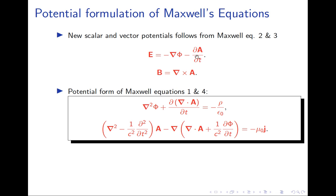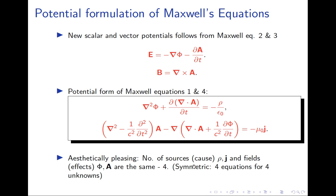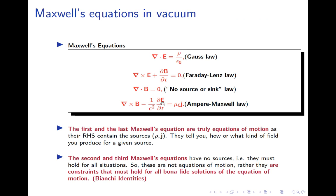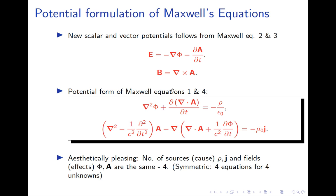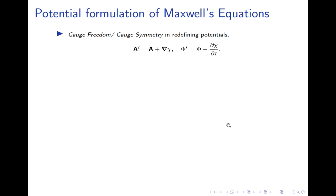There is an ambiguity in the definition of the potentials called gauge freedom or gauge symmetry — more precisely, a redundancy in description. If we replace A → A' = A + ∇χ and φ → φ' = φ − ∂χ/∂t, where χ is an arbitrary function of space and time, then the physical fields E and B are unchanged. Curl of a gradient vanishes, so B = curl A = curl A'. Similarly, the new φ' and A' reproduce the same electric field.